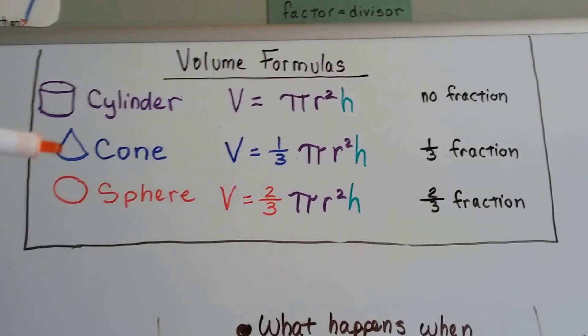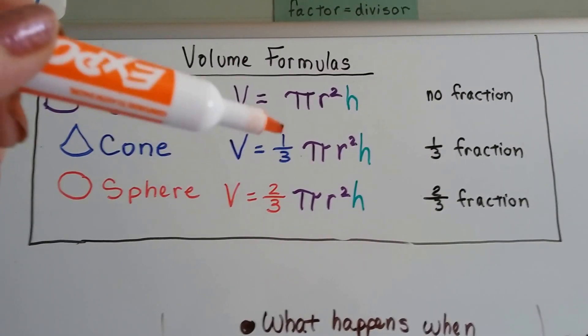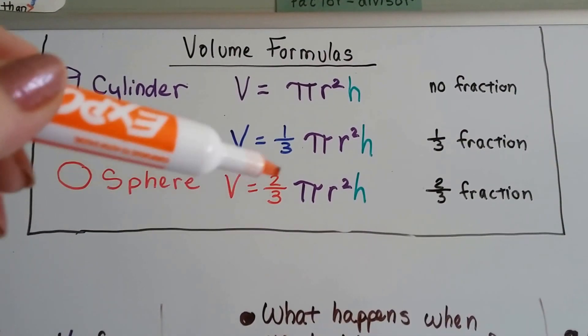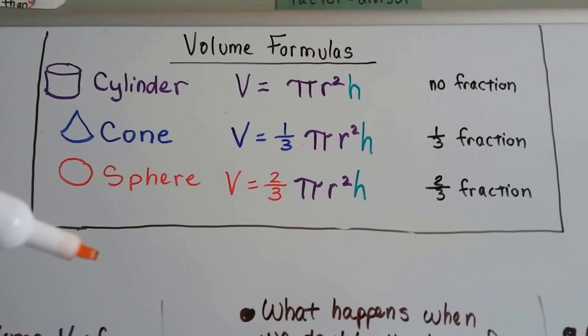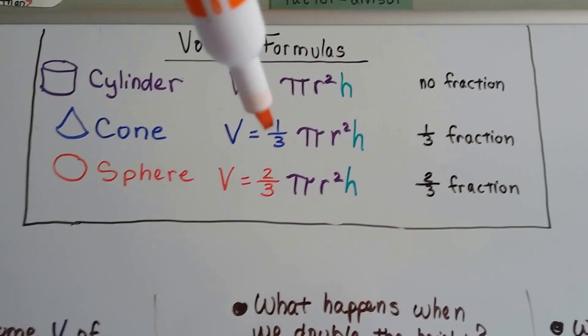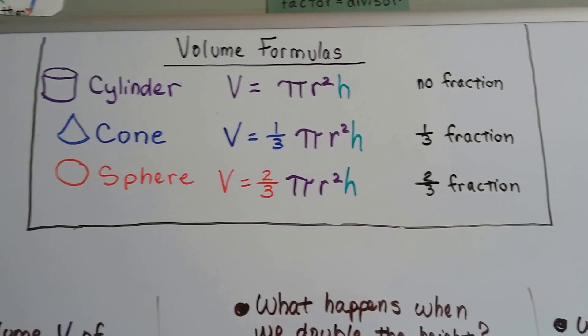When we're going to do the cone coming up soon, we throw a one-third fraction up here in the front. And when we're going to do the sphere like a baseball or a basketball, we throw a two-thirds here in front of the pi r squared h. They're all pi r squared h like the cylinder, but the cone's got one-third and the sphere's got two-thirds. That might help you remember them.